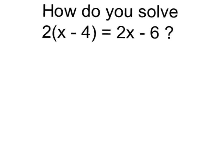When you have something like parentheses, it makes it more difficult to separate that out. So one thing we can do to get started is distribute, use the distributive property, multiply each of those by 2, which gives me 2x minus 8 is equal to 2x minus 6.